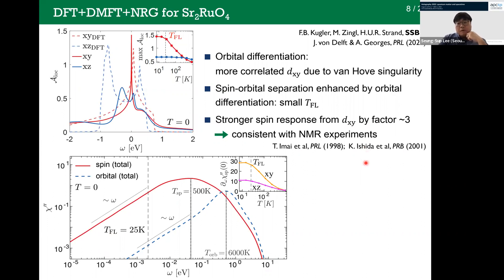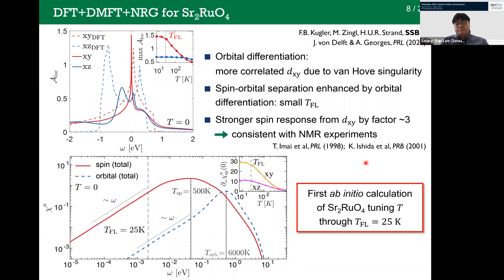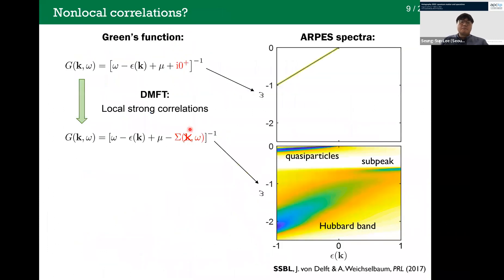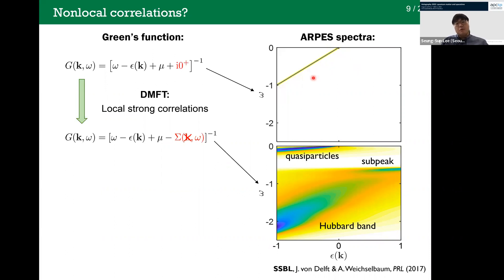To conclude the first part: this is the first ab initio calculation of Sr2RuO4 tuning temperatures from very large values through 25 Kelvin down toward zero. No other method can do this. DMFT was successful because we can treat the omega dependence of self-energy. Without this omega dependence — as in standard DFT — we would have a very boring simple band structure. By including it, we can capture the rich structure of the band structure, such as the quasiparticle band, Hubbard band, and satellite peak.